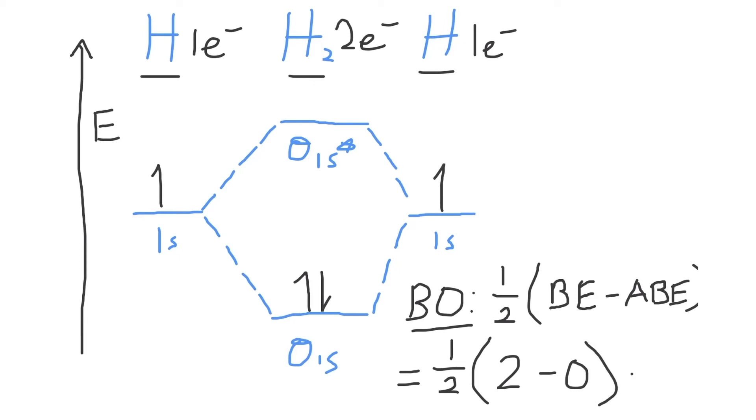So the bond order for the hydrogen molecule will equal one. And this makes sense. There's one pair of electrons that are shared in hydrogen if we draw the Lewis structure. So a bond order of one typically corresponds to a single bond.